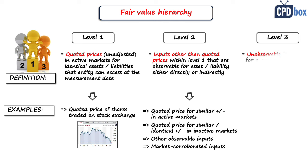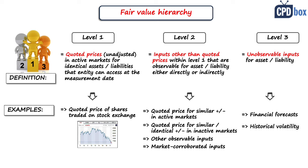Level 3 inputs are unobservable inputs for the asset or liability, such as financial forecasts or historical volatility — for example, volatility derived from a share's historical prices, used for valuing call or put options. Another example is adjustment to mid-market consensus prices when prices are set in bid-ask spreads to cover a dealer's margin. You should maximize use of Level 1 inputs, use Level 2 if Level 1 is unavailable, and only use Level 3 inputs as a last resort.